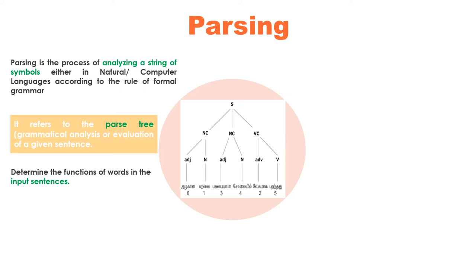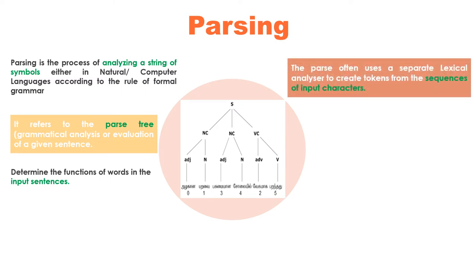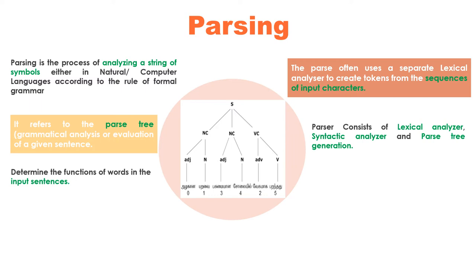The parser often uses a separate lexical analyzer to create tokens from the sequence of input characters. The parser consists of the lexical analyzer, syntactical analyzer, and parse tree generation. The lexical analyzer creates a token, then the syntactical analyzer creates a parse tree. Parsing is the process of taking a string and a grammar and building a parse tree for that string.